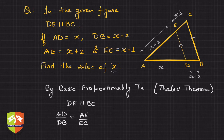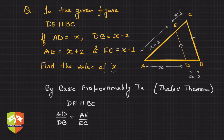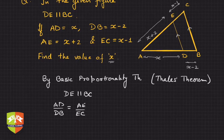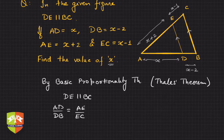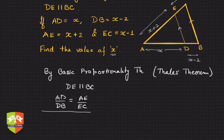So AE upon EC — we should be very clear as to what all values are given. Now everything is in terms of x, so we can write: x upon x minus 2 is equal to...